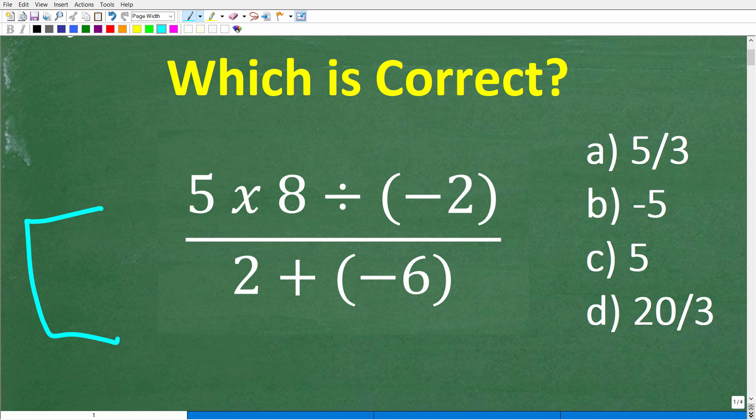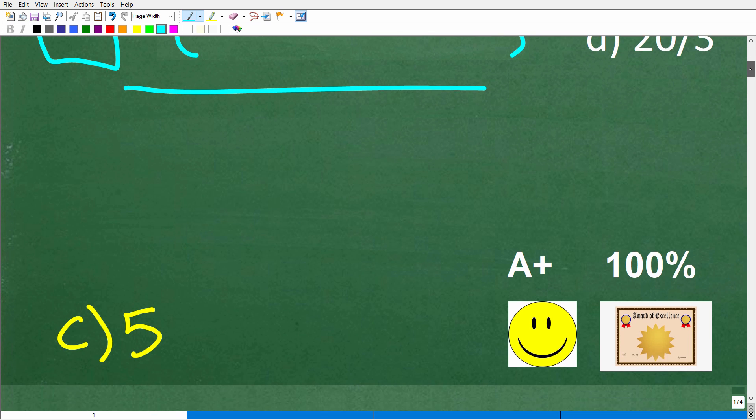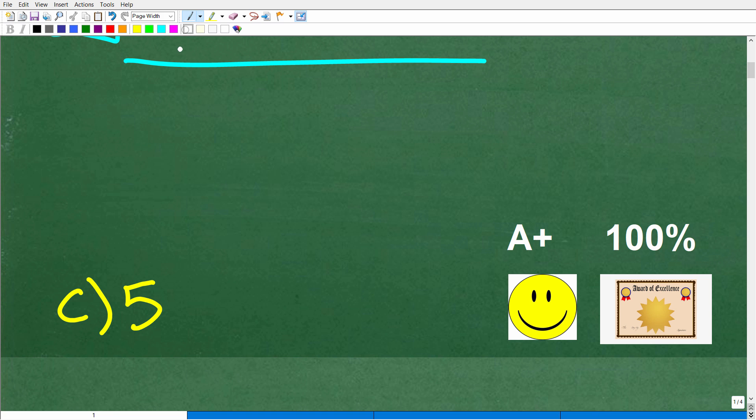Now, for those of you that are going to say, Mr. YouTube Math Man, I'm just going to get my calculator and figure this out, well, you have to be careful with using a calculator as well. If you don't enter this thing correctly into your calculator, you can also get the wrong answer. I'll talk about that in this video as well. But let's go ahead and take a look at the correct answer. The correct answer is C, which of course is five.